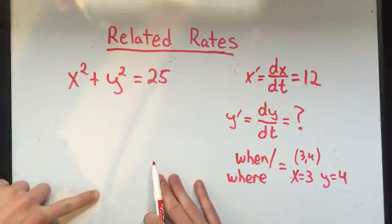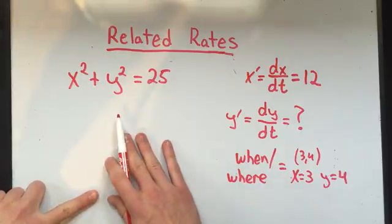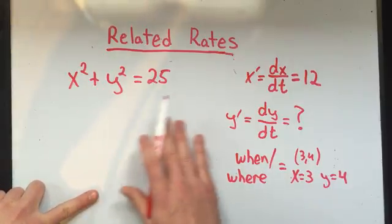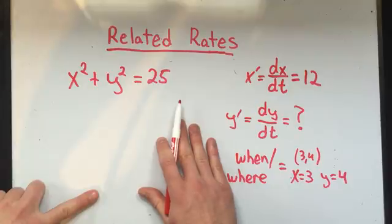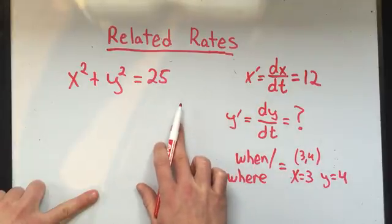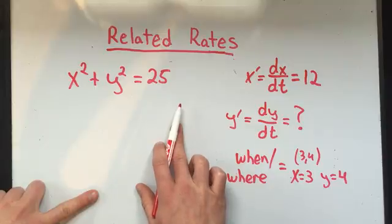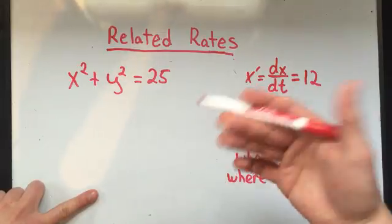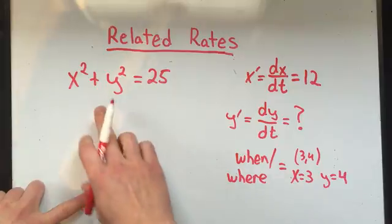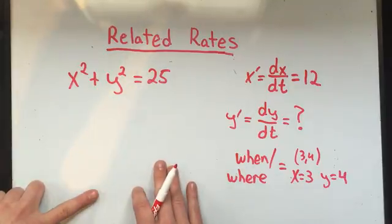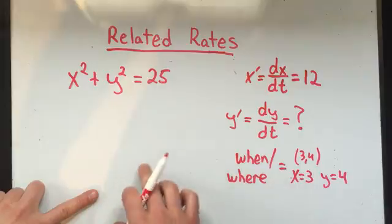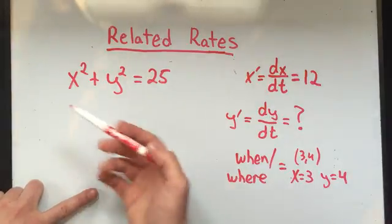So, remember, from implicit differentiation, whenever we took the derivative of y, we multiplied by y prime, or dy over dx, because we are taking the derivative in respect to x. And we didn't have to do that with the x variables, because they were x variables. But here, every variable, we're going to have to multiply by d, that variable, over dt. Let me show you what I mean.